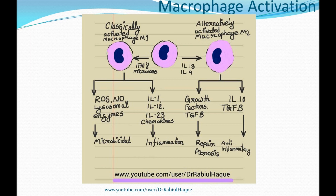Once activated by the classical pathway, the M1 macrophage increases production of nitric oxide and reactive oxygen species and also upregulates lysosomal enzymes — all of which increase the ability to destroy microorganisms. At the same time, the macrophage secretes cytokines such as interleukin-1, interleukin-12, interleukin-23, and certain chemokines, all of which stimulate inflammation.